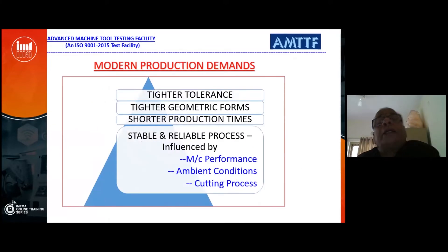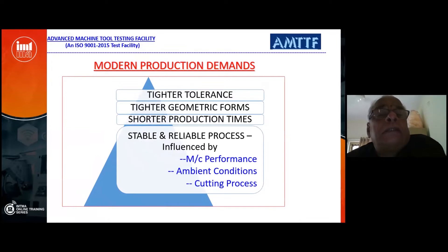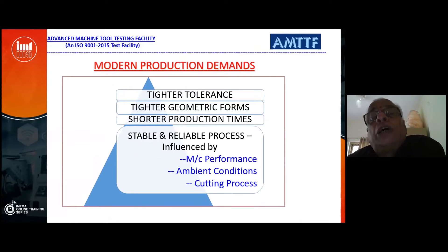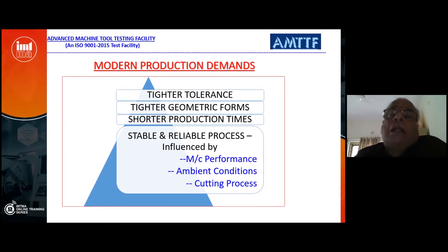In modern production, there are many demands: higher tolerances, tighter form errors, shorter production times, and reliable processes. These are influenced by machine performance, ambient conditions, and the process of component manufacturing. We are trying to explain one by one which factors affect what.